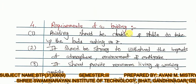Requirement of a building: the building should be durable and stable to take up the loads acting on it. It should be strong enough to withstand the impacts of atmosphere, environment, and earthquake. The building should be so strong that the effects of atmosphere, environment, and earthquakes do not affect it significantly.